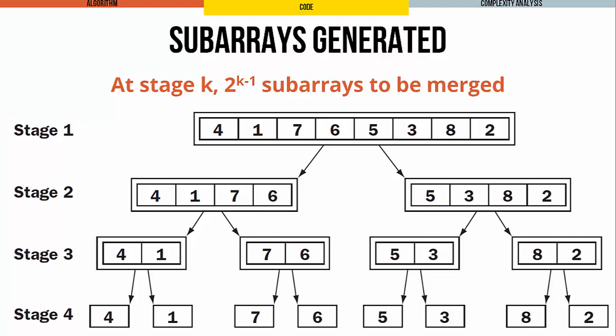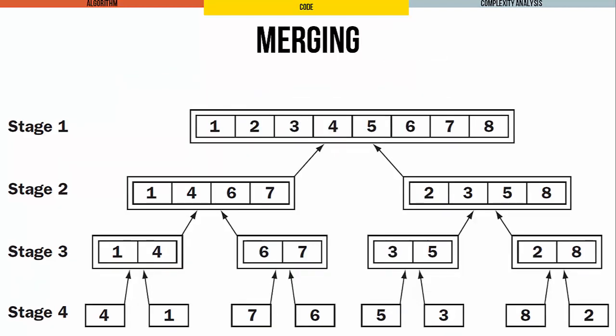Here you can see the subarrays that get generated during all the recursive calls to merge sort helper, starting with an array of eight items. In this example, the subarrays are all evenly subdivided at every stage because we're starting with a power of two. That means there are 2^(K-1) subarrays to be merged at stage K. If the length of the original array were not a power of two, an exactly even number of subdivisions wouldn't happen at every stage, and the last stage wouldn't have a full set of subarrays. Merging looks similar but happens in the opposite direction — read the picture from the bottom up — and we end up with a sorted array as the final product.